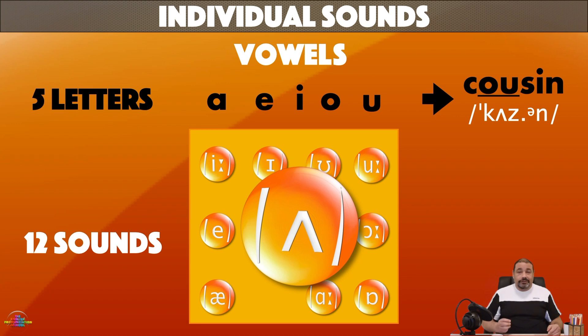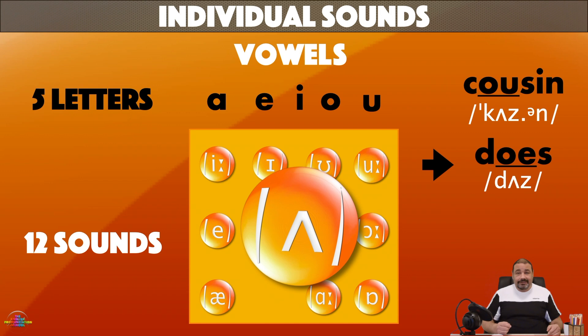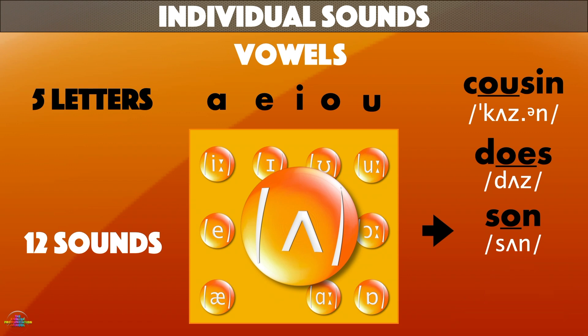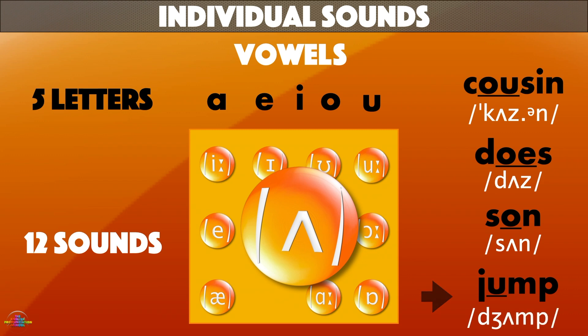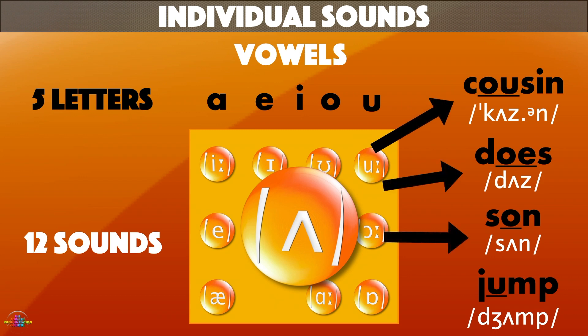It is also the sound of the letters O and E in the word 'does'. It is the letter O in the word 'sun'. And it is the sound of the letter U in the word 'jump'. So in this example, we can see that one sound is present in these four words with different spelling: cousin, does, sun, and jump.